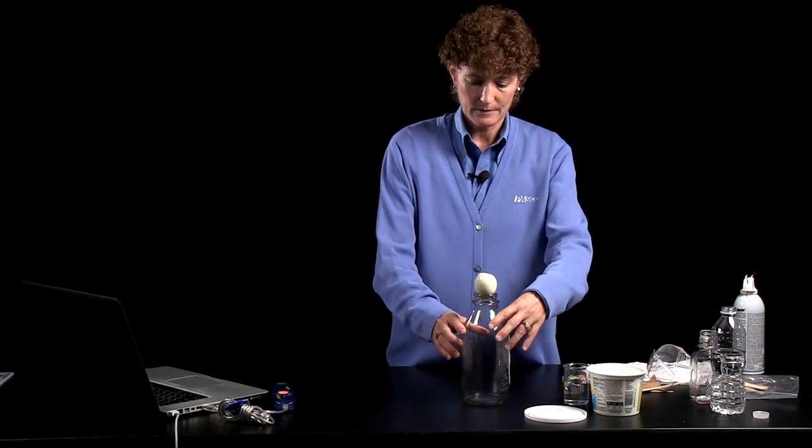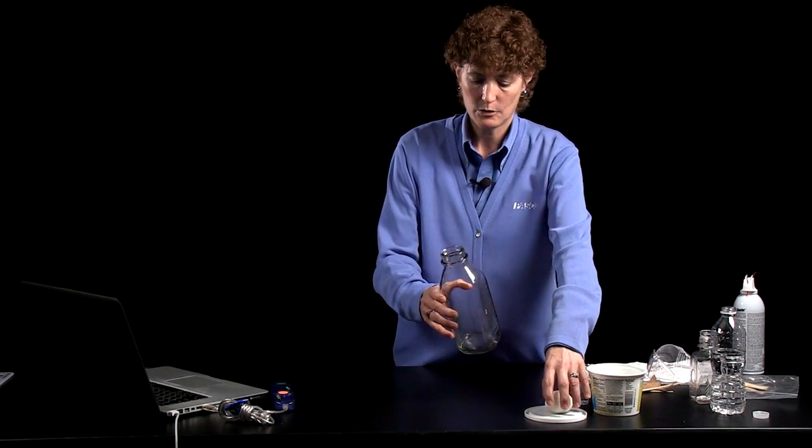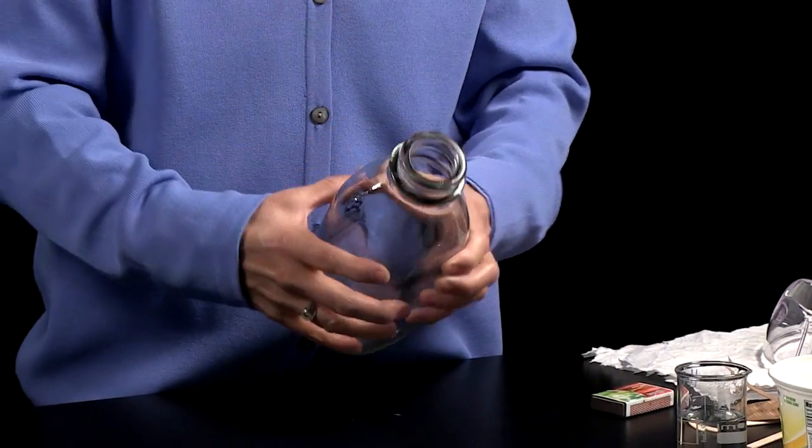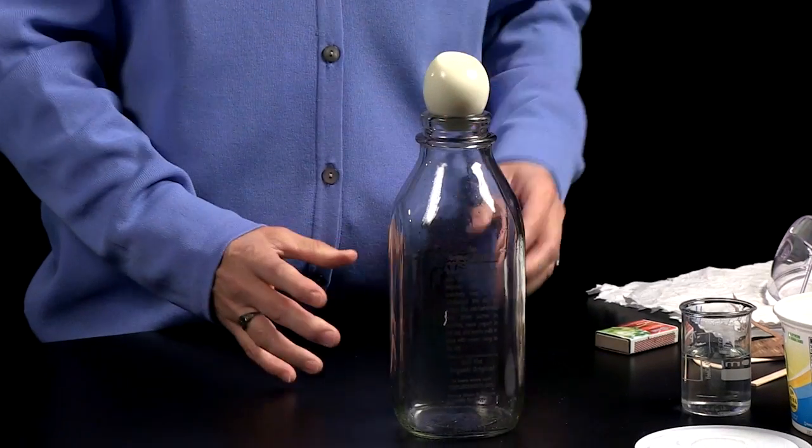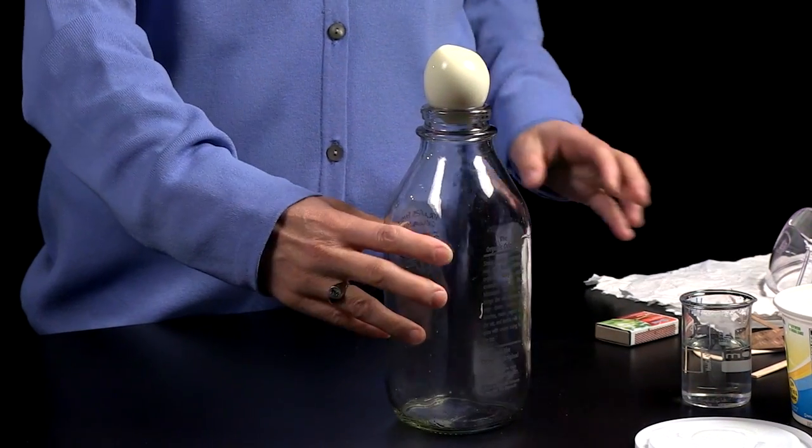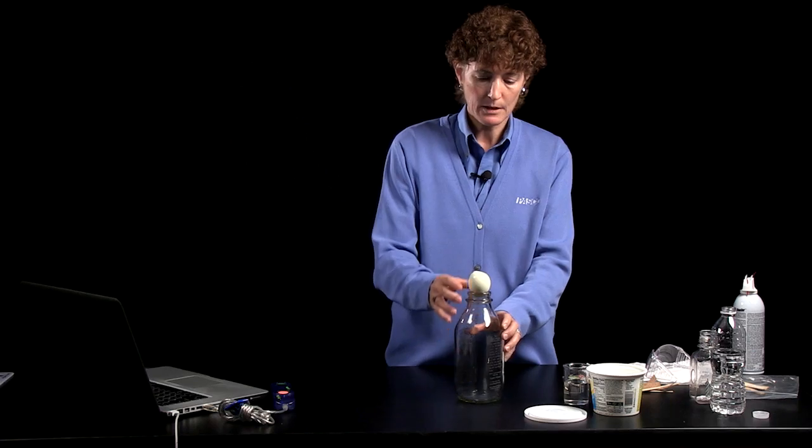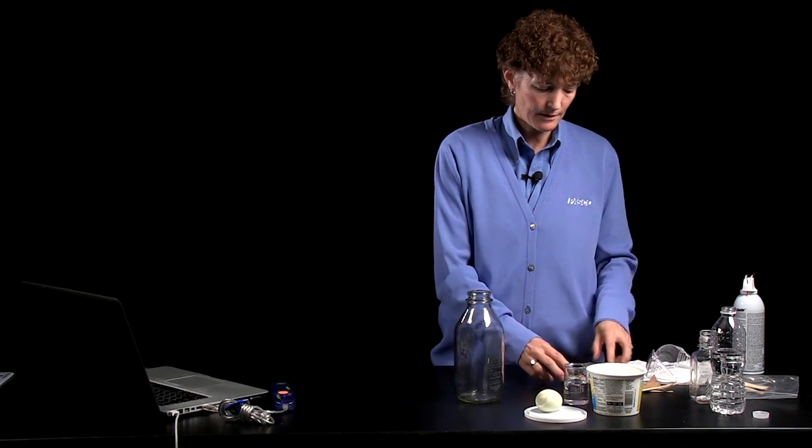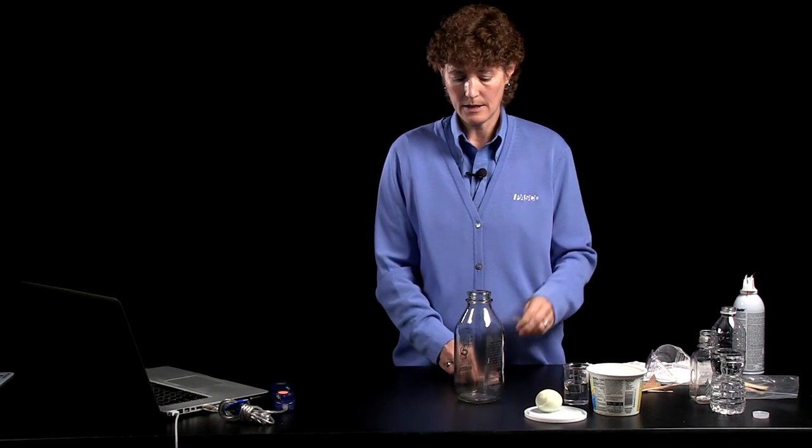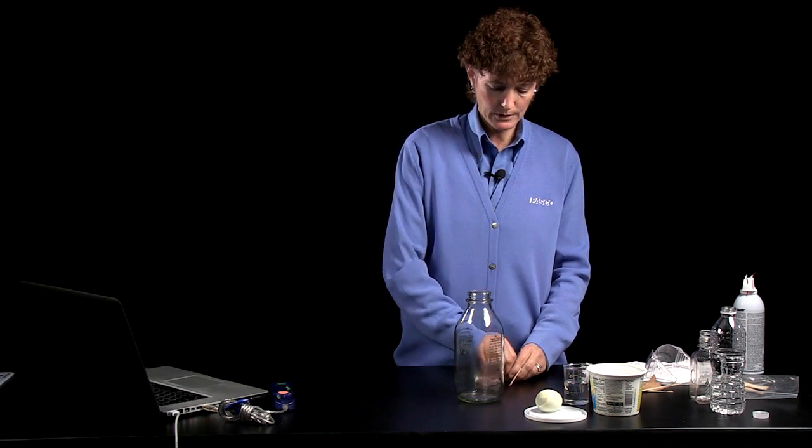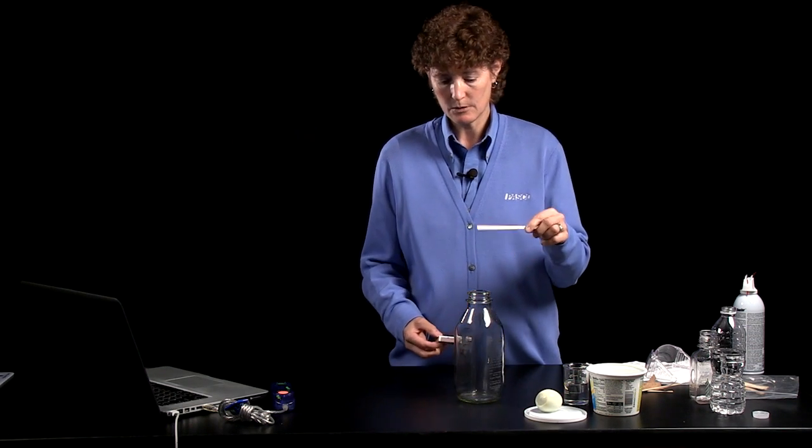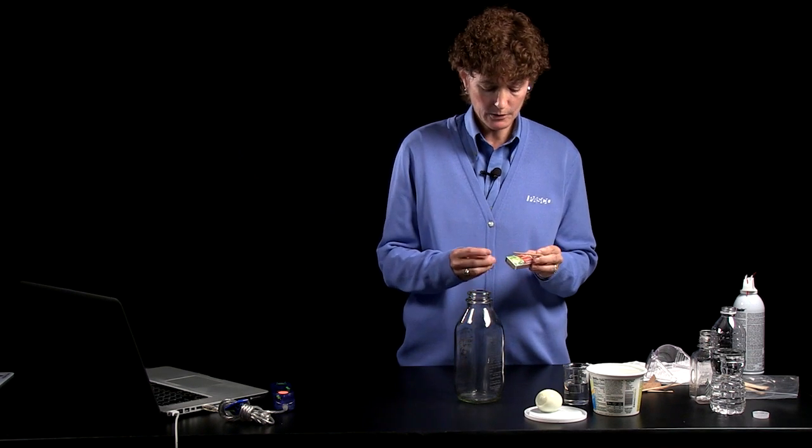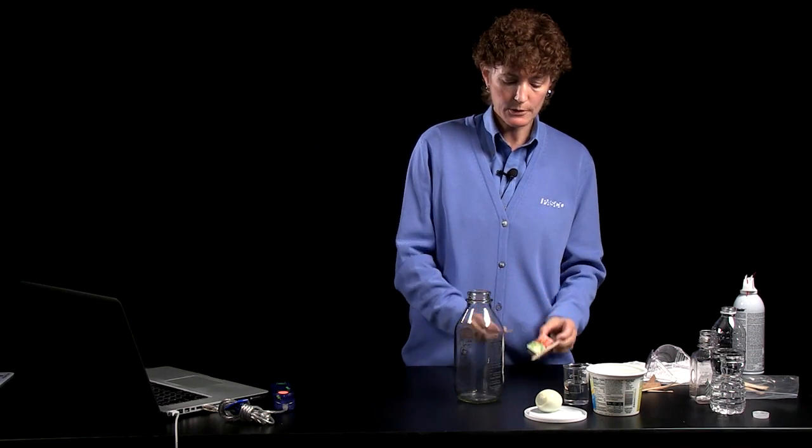So what I have here is just a regular old-fashioned milk bottle, and you can see that the opening of the milk bottle is smaller than the egg. How we're going to do this is to take some means of lighting a fire and putting a lit wood splint into the bottle. I'll go ahead and do that, but before I do,